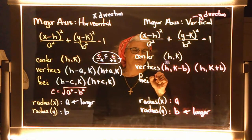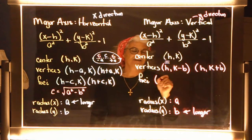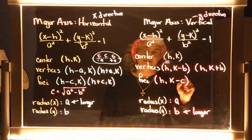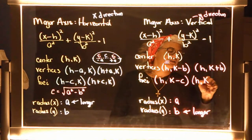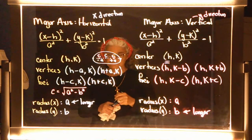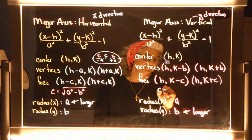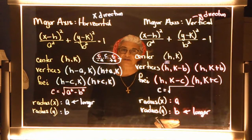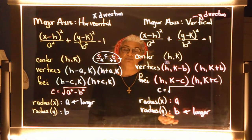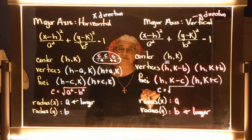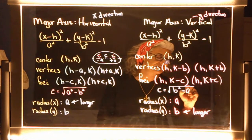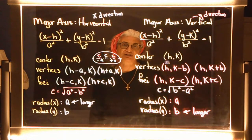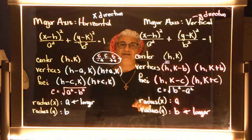For the foci of a vertical ellipse, the y value is doing the changing: foci are at (h, k−c) and (h, k+c). To find c, be careful: b is longer here, so b² is larger. Therefore c = √(b²−a²). Always write the longer radius squared minus the shorter radius squared, so you don't get an imaginary number.